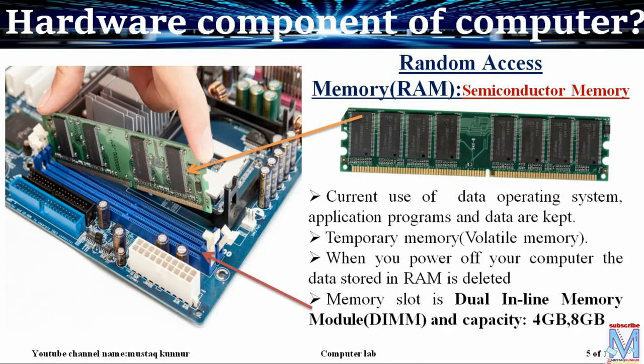Random access memory. This is a type of semiconductor memory which holds the current data of the operating system and application programs. Assume that a user is writing a letter using Microsoft Word — before saving that letter, the data is stored on the RAM. Once you save that file, it goes and gets saved onto the hard disk.